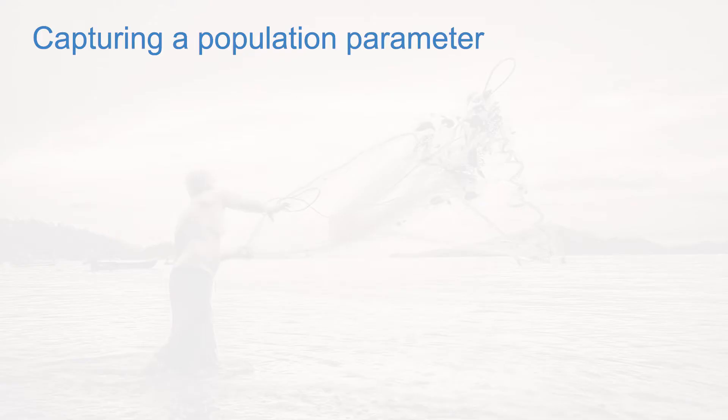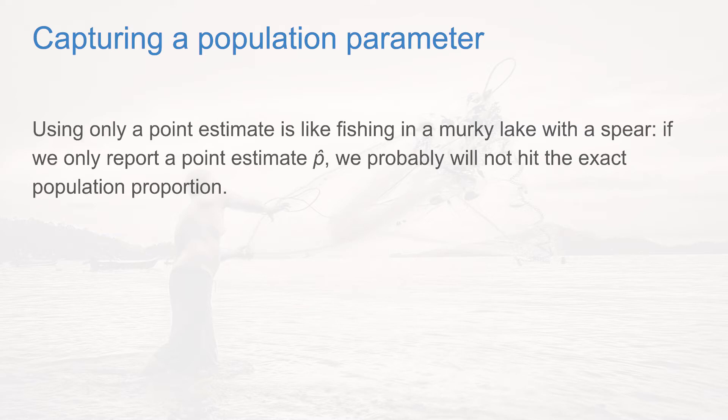A confidence interval is motivated by a particular issue that we have with a point estimate. If we're using a point estimate, it's kind of like fishing in a murky lake with a spear. If we only report a point estimate, p-hat, we probably will not hit the exact population proportion.